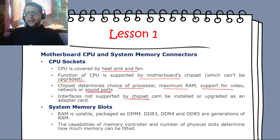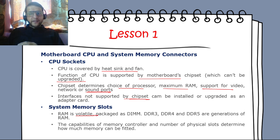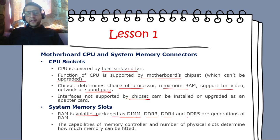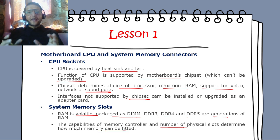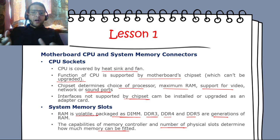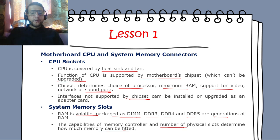RAM is volatile — data remains while power is on but is lost when power is disconnected. It is packaged as DIMM — Dual Inline Memory Module. DDR3, DDR4, and DDR5 refer to Double Data Rate generations. The capabilities of the memory controller and the number of physical slots determine how much memory can be fitted. CPU-Z is a useful software tool that shows how much RAM your system supports without opening it.